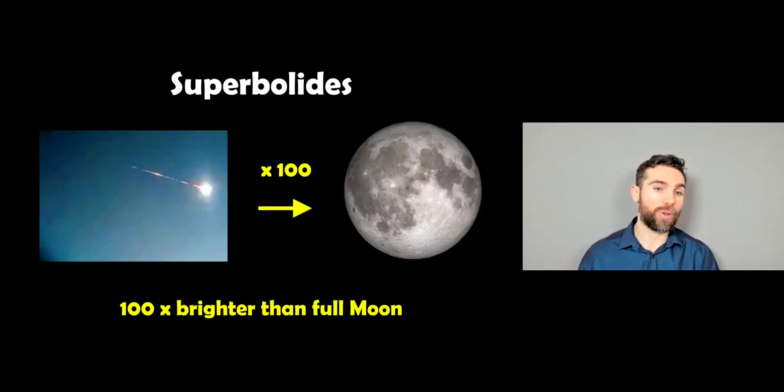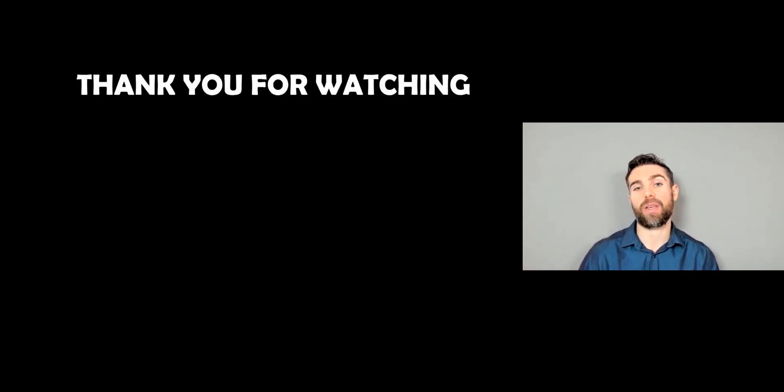Now our superbolide, which is the one that we saw earlier, these are actually a hundred times brighter than the full moon, so these are significantly brighter than a normal bolide. They're also going to be significantly rarer as well. The larger objects are very rare whereas the smaller ones like the pebble-size meteors you'll be able to see quite easily, whereas a superbolide they are going to be very rare. Now thank you for watching, and if you enjoy then check out some of the other videos.